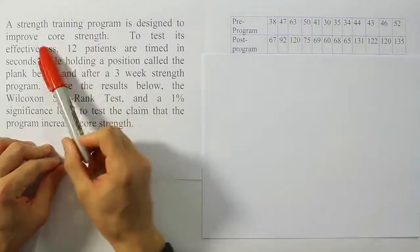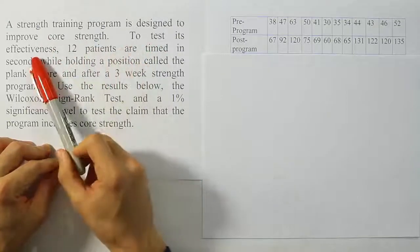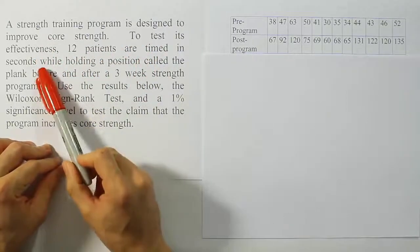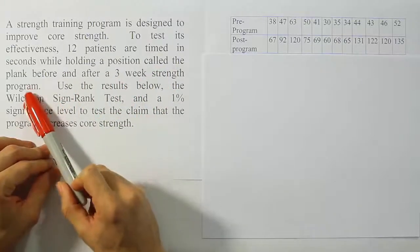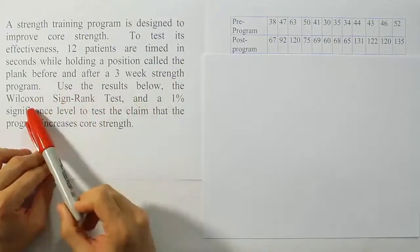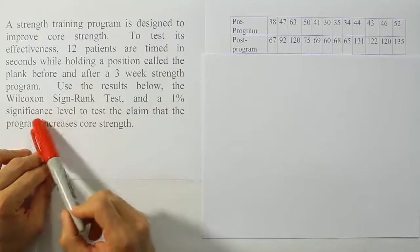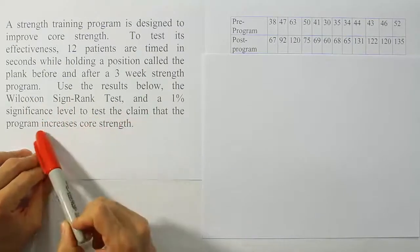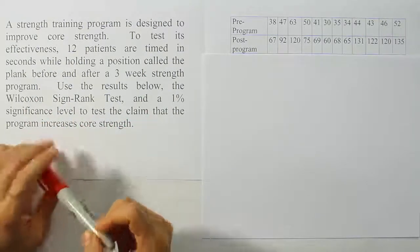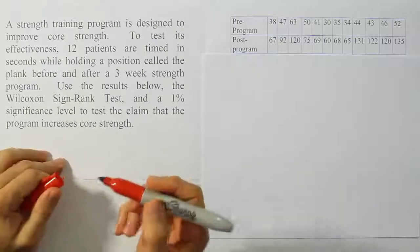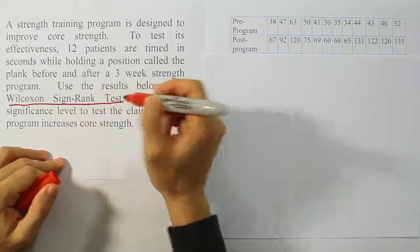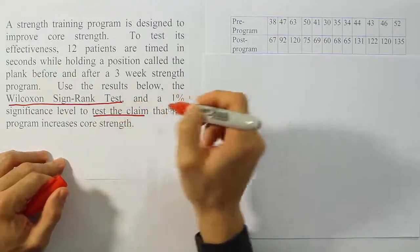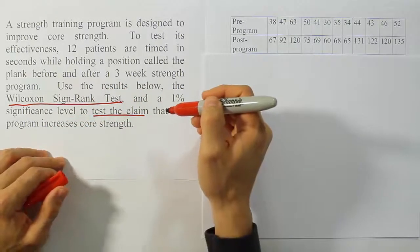A strength training program is designed to improve core strength. To test its effectiveness, 12 patients are timed in seconds while holding a position called the plank before and after a three-week strength program. Use the results below, the Wilcoxon Sign-Rank Test, and a 1% significance level to test the claim that the program increases core strength. So here they're asking us to use a specific procedure, the Wilcoxon Sign-Rank Test, in order to test the claim that the program increases core strength.